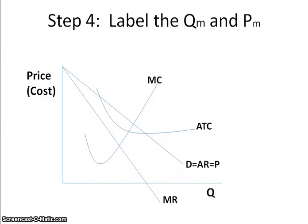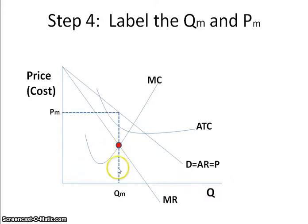Step 4: Label the quantity and the price for the monopoly. The profit maximizing output formula is MR equals MC, and this is used for any of the firms. At MR equals MC, that gives you the quantity. You then take it up to the demand curve, and this gives you the price for the monopoly.